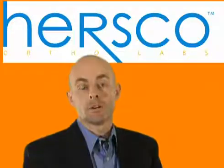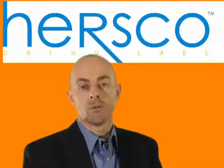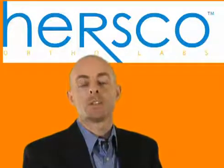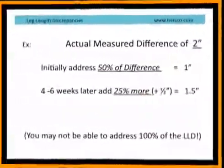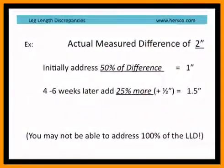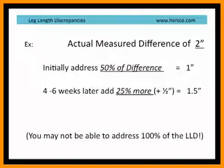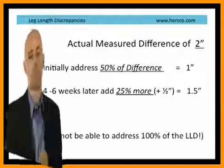Place the material under the patient's heel or under their foot and see how much they can tolerate. Look for signs of comfort. Even if you have measured a leg length discrepancy of, say, two inches, it's important not to give them the full lift at the outset. Start at about 50%, or one inch. If they can tolerate this for four to six weeks, consider adding another 25%, or half an inch.